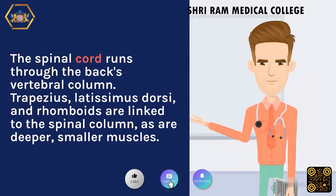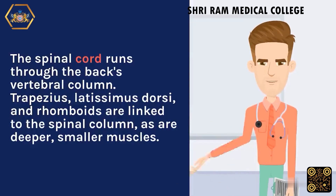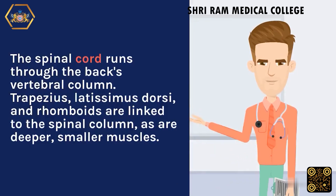The spinal cord runs through the back's vertebral column. The trapezius, latissimus dorsi, and rhomboids are linked to the spinal column, as are deeper, smaller muscles.